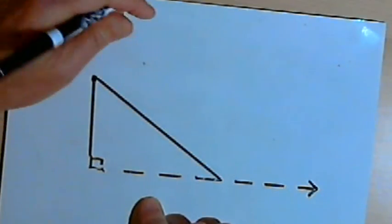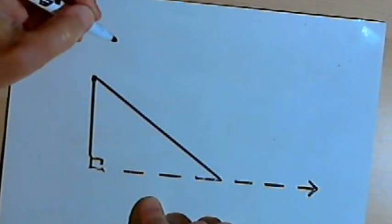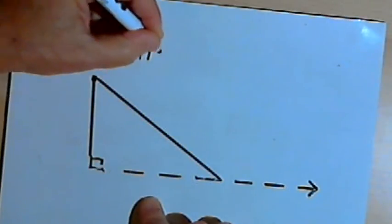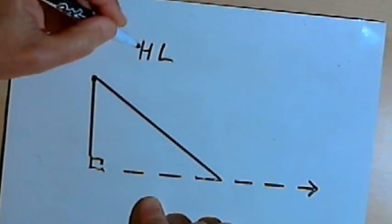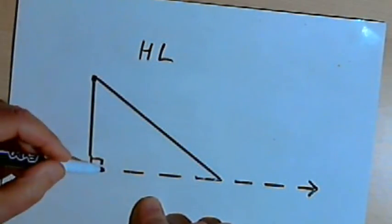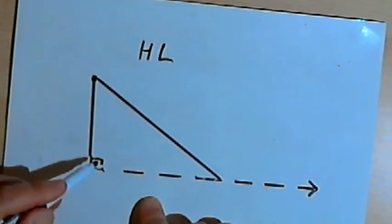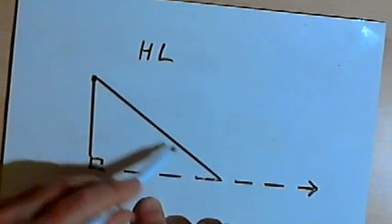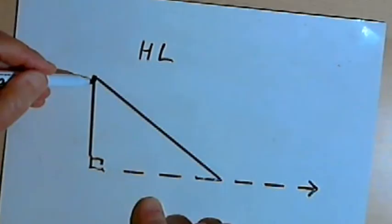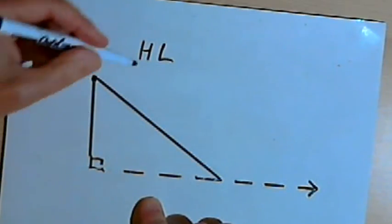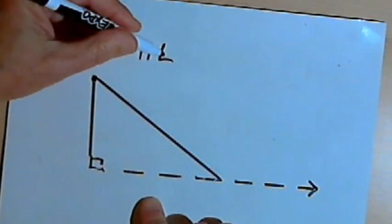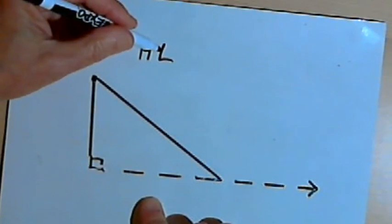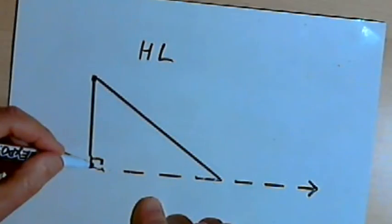When I have a right angle, instead of saying side-side-angle, sometimes you'll see this referred to as just HL, for hypotenuse leg. Because when you've got a right angle, the side opposite that angle is the hypotenuse. The sides next to the angle are called legs. So if you've got hypotenuse leg as a kind of congruency with a right angle, then you know you've got two congruent triangles also.